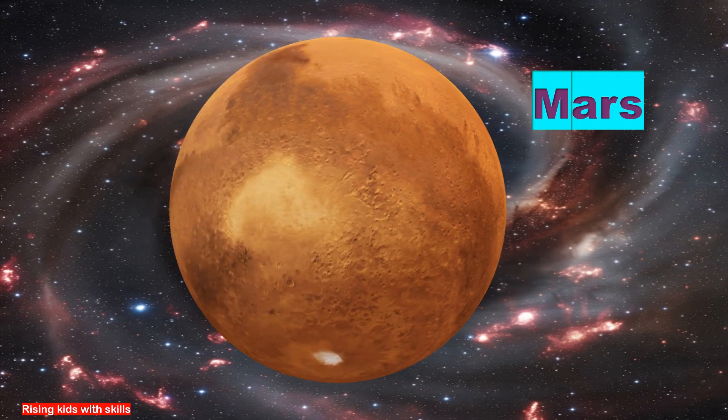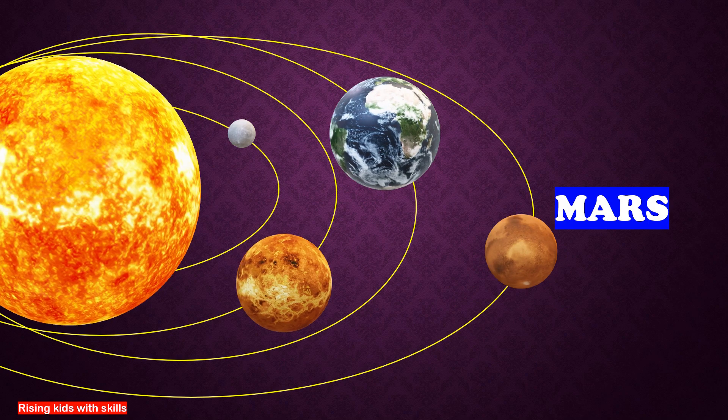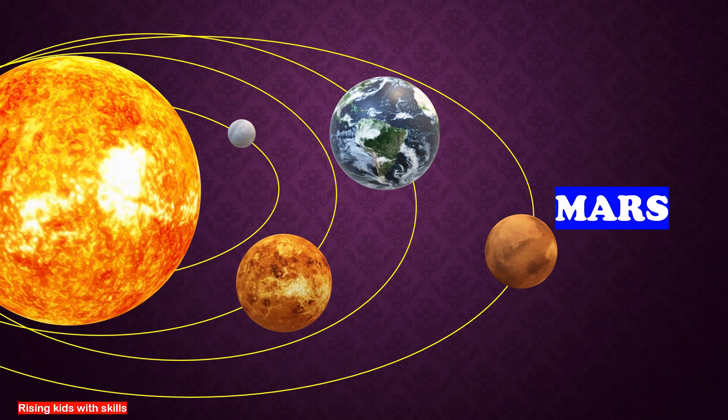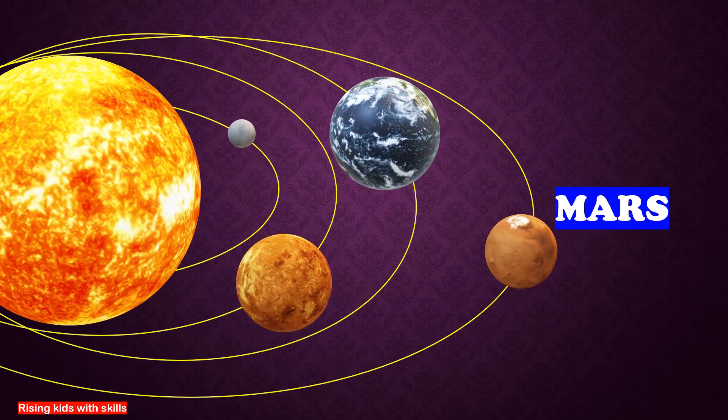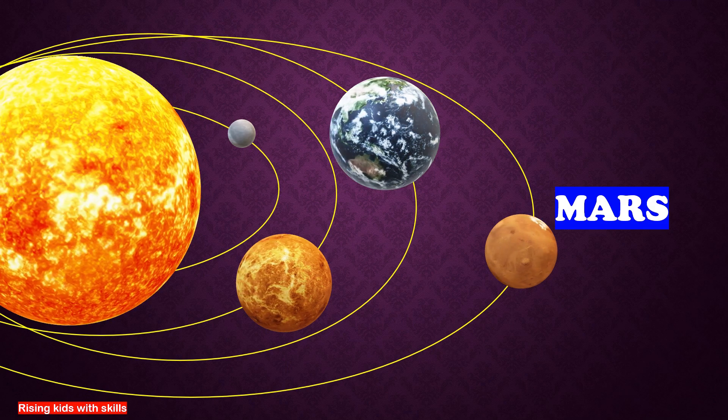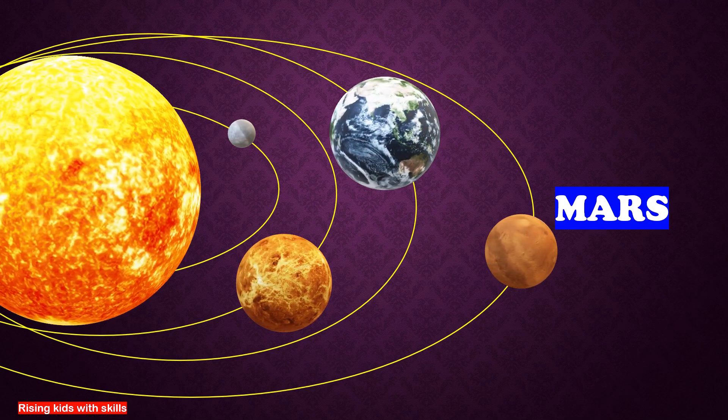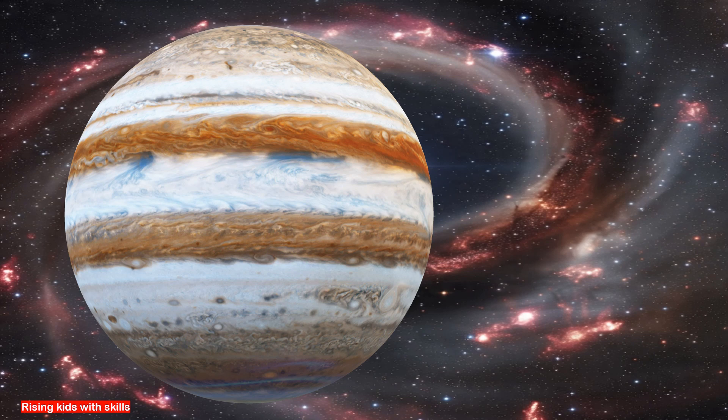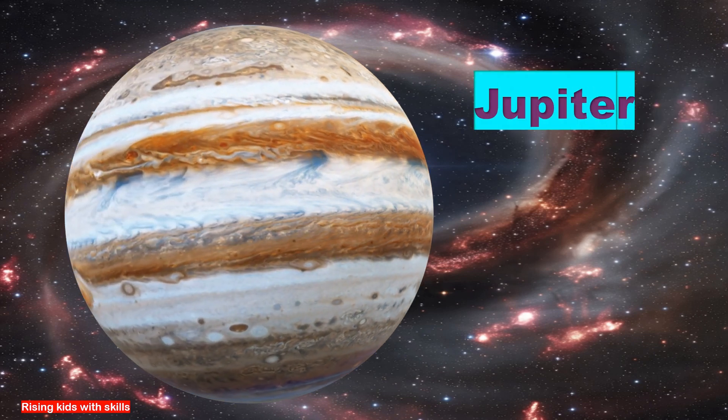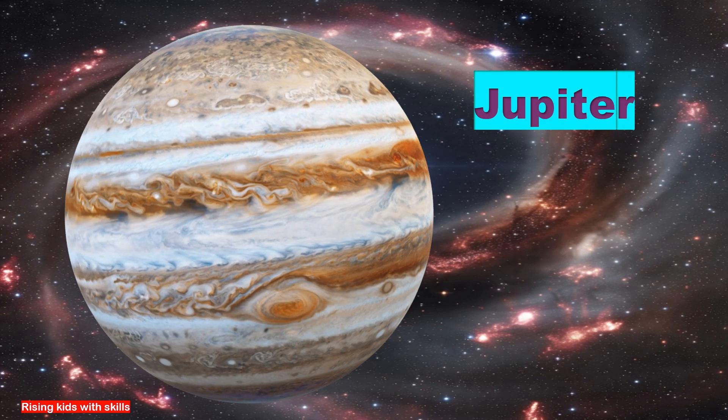This is Mars, the fourth planet of our solar system. It is also known as the red planet because of its color. Mars has the tallest volcano in the solar system named Olympus Mons. Scientists are exploring it as a possible place for future human colonies.